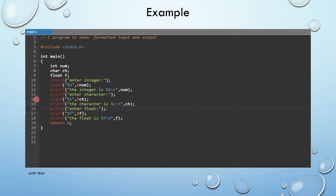First, we use a printf statement to print "Enter integer" on the console. Next, scanf("%d", &num) — %d is the format specifier for integer, so we are reading a value of integer data type. Then we print those values back to the console.